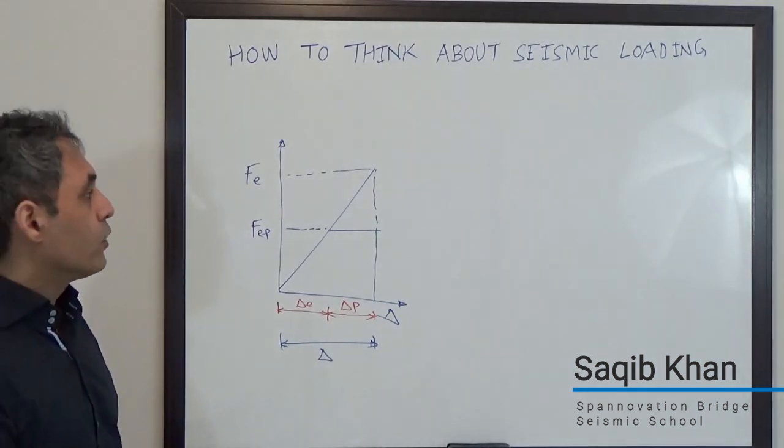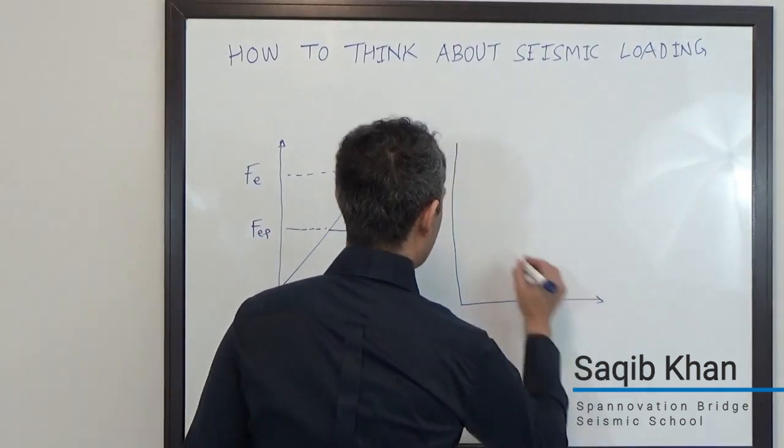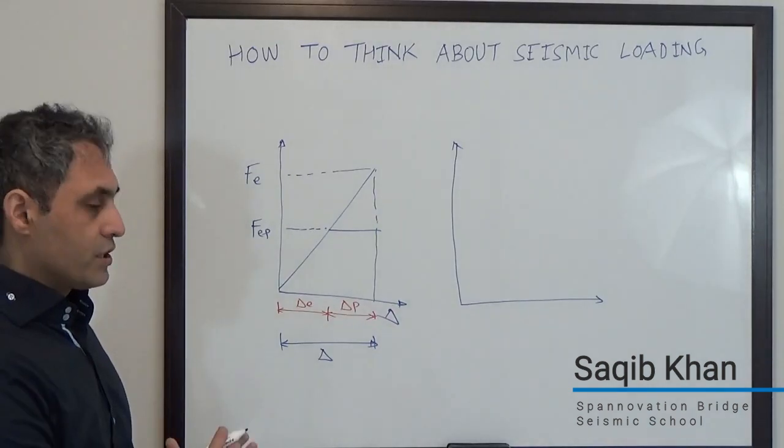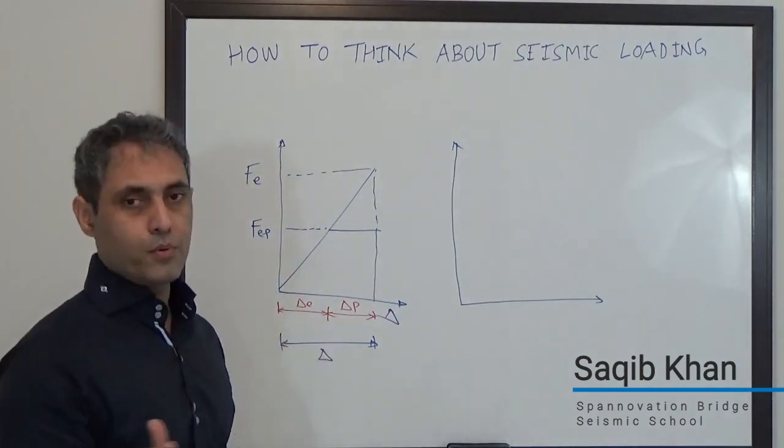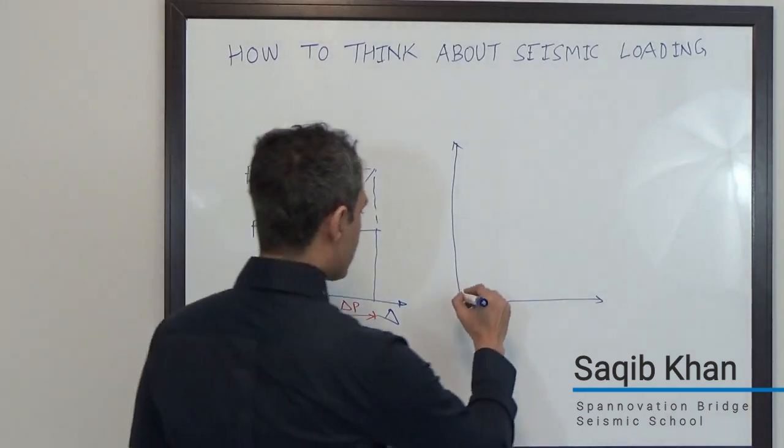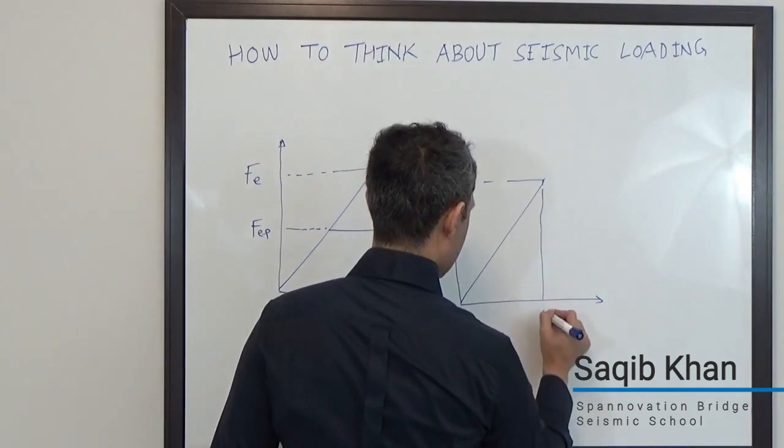I also wanted to bring up very quickly the equal energy principle, which applies for cases where the structural period can be on the lower side, say lower than 0.5 to 0.6 seconds. In that case, an elastic system would go to there with this much delta.